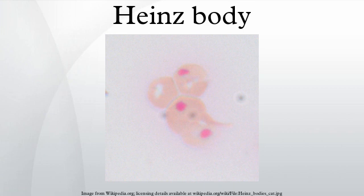The presence of Heinz bodies may also be a feature of hyposplenism or asplenia, when a damaged or absent spleen cannot remove these damaged cells from circulation.